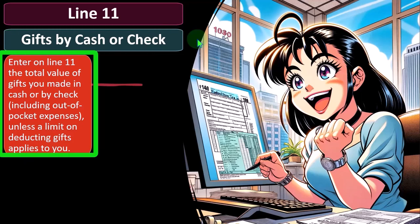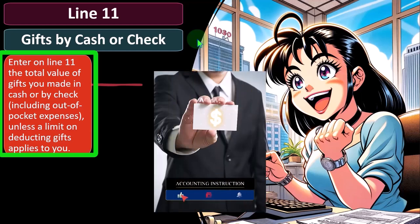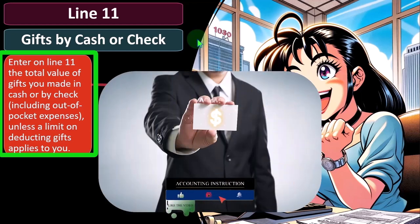Enter on line 11 the total value of gifts you made in cash or check, including out-of-pocket expenses, unless a limit on deduction gifts applies to you. We talked a little bit about some of the limits in a prior presentation, remembering that if you're looking at lower income taxpayers, the problem is they might not be able to get a benefit from giving to charity because they're not itemizing.